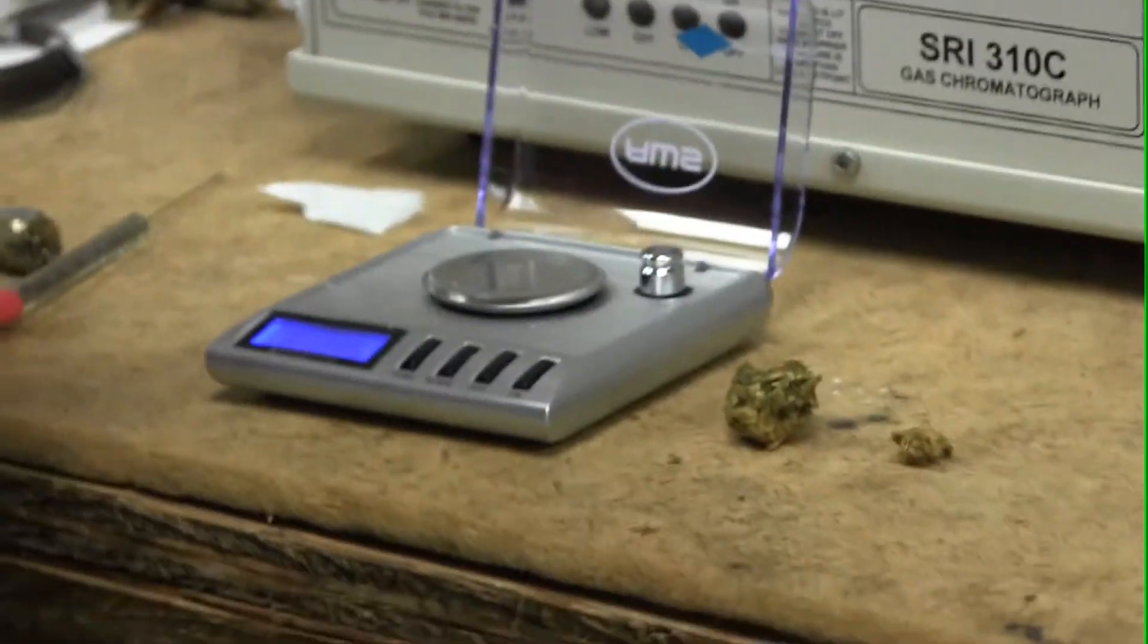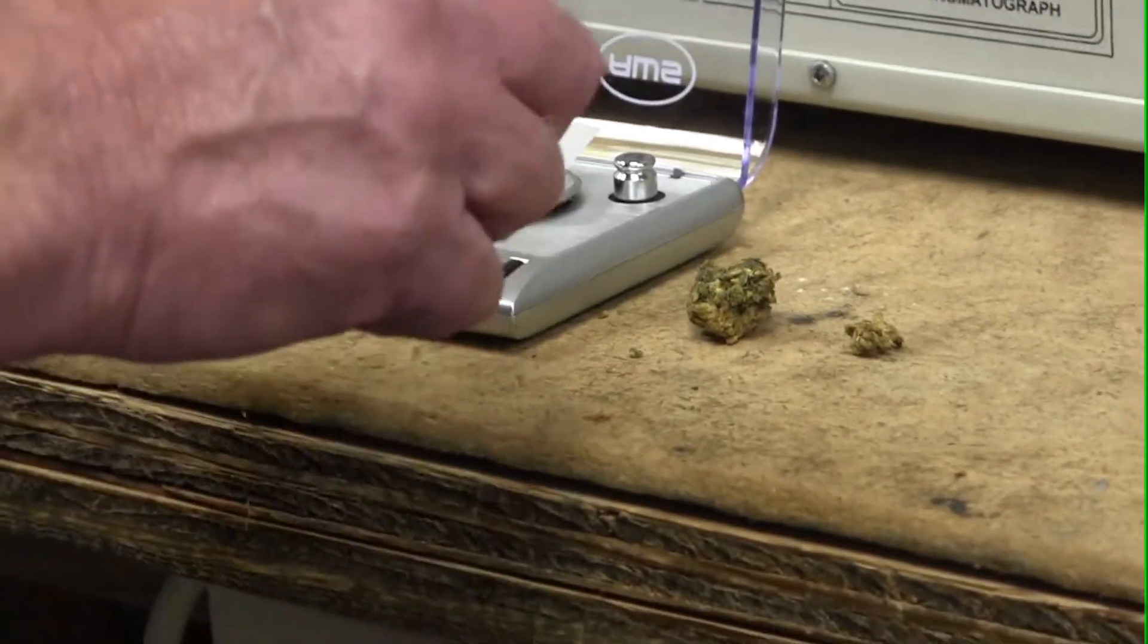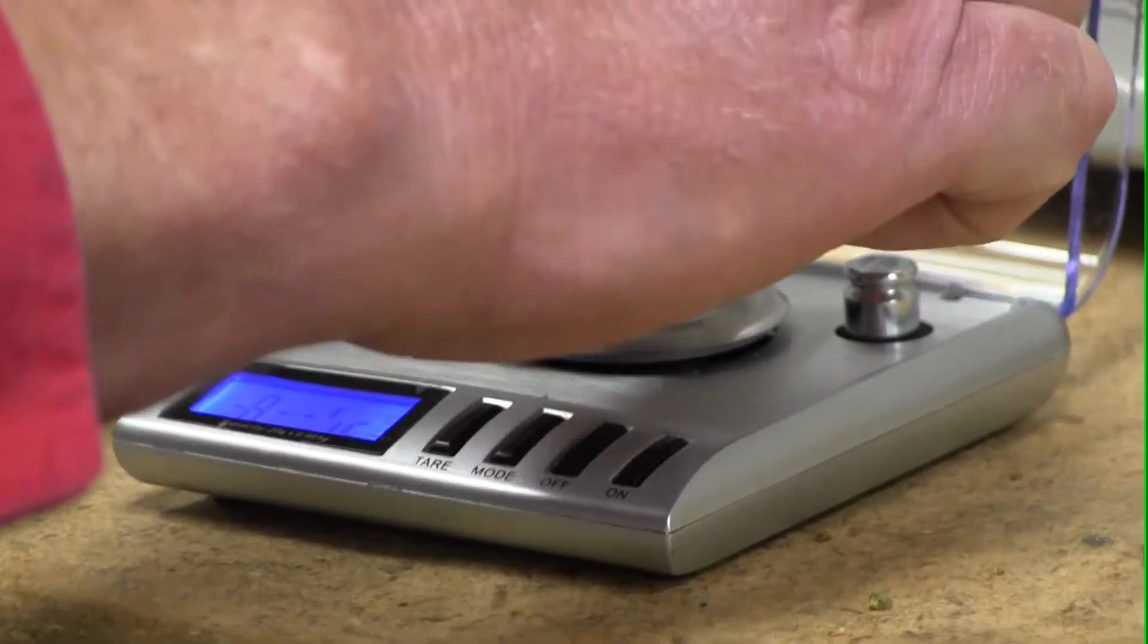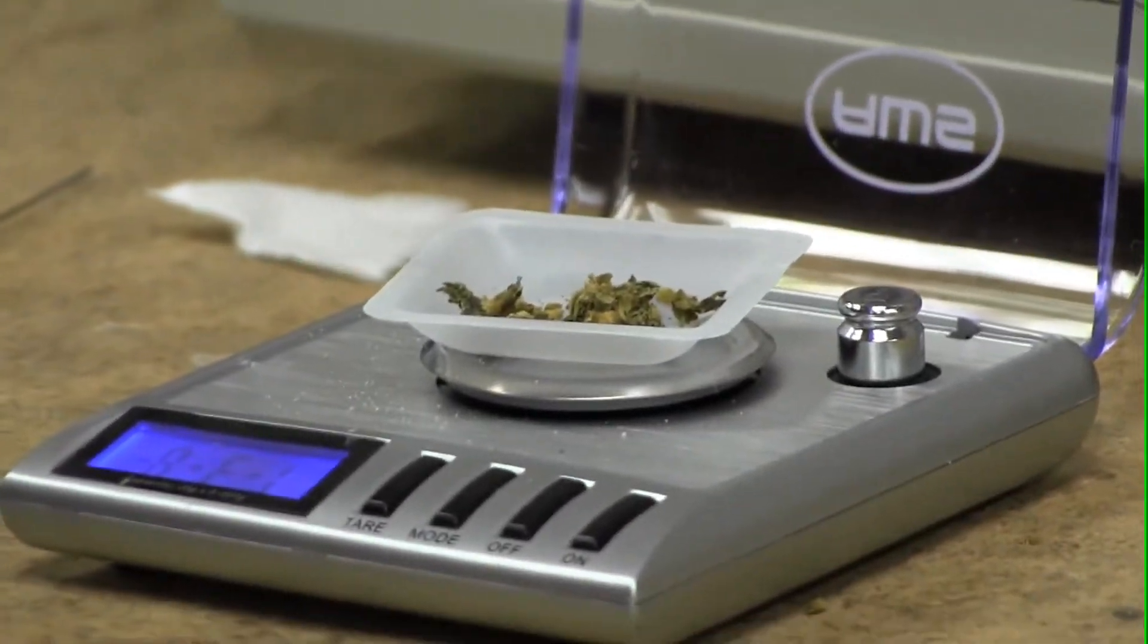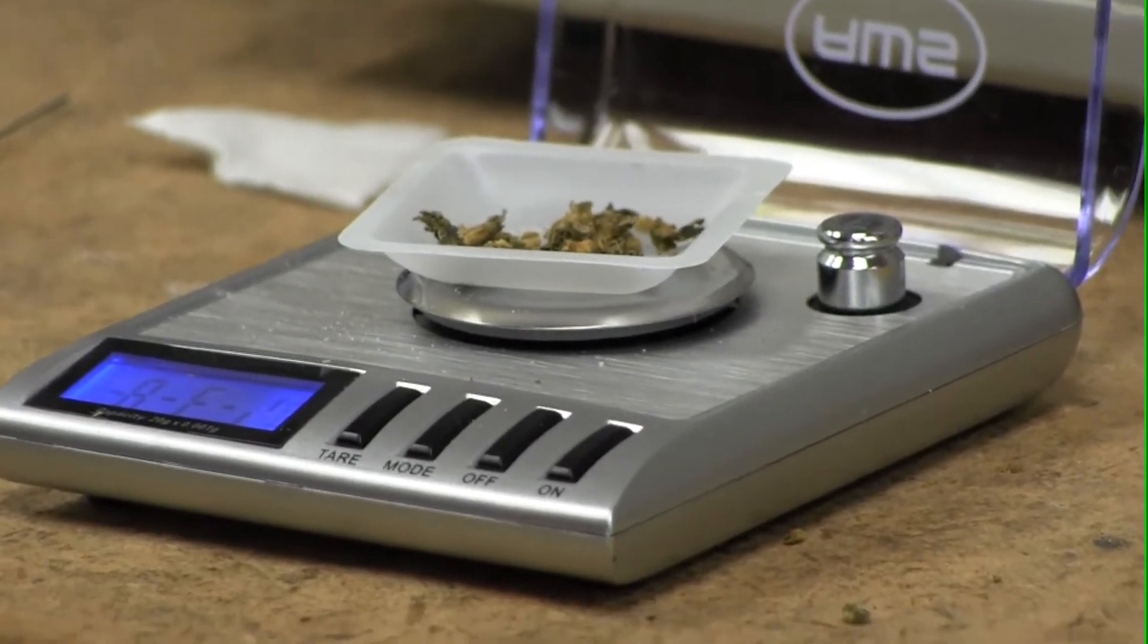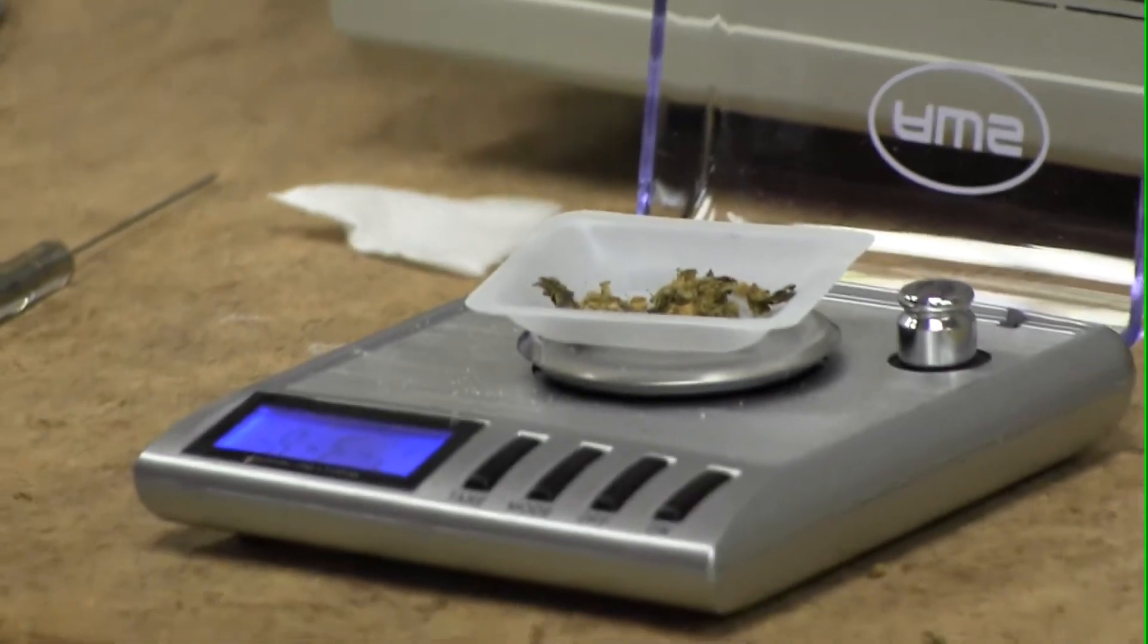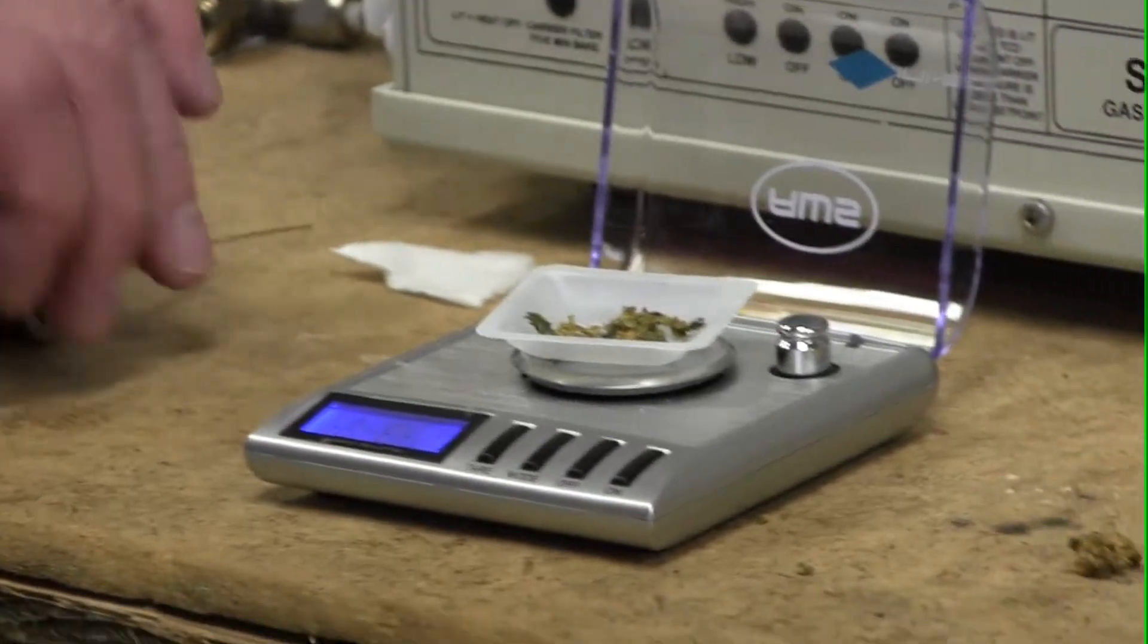So we take one of these little plastic things called a weighing boat, and we put it on the scale like that, and then hit the tare again. And then we're going to put in 100 milligrams of the Durban poison. You never hit exactly 100 milligrams - like right there, it's saying 105 milligrams. And that's okay, because there's someplace in the software where you put in the actual weight. So it doesn't really matter if it's exactly 100. It could be 95 or it could be 110.